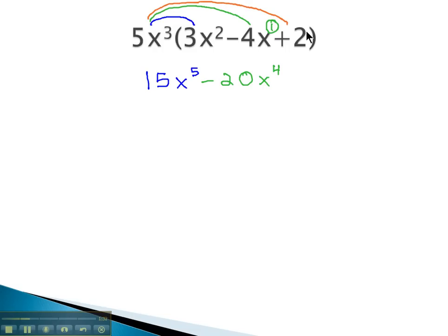Finally, we'll multiply the 5x³ times the 2. 5 times 2 is 10. There's no additional x's, we still have the x³ though. And so we end up with our final product: 15x to the 5th, minus 20x to the 4th, plus 10x cubed.